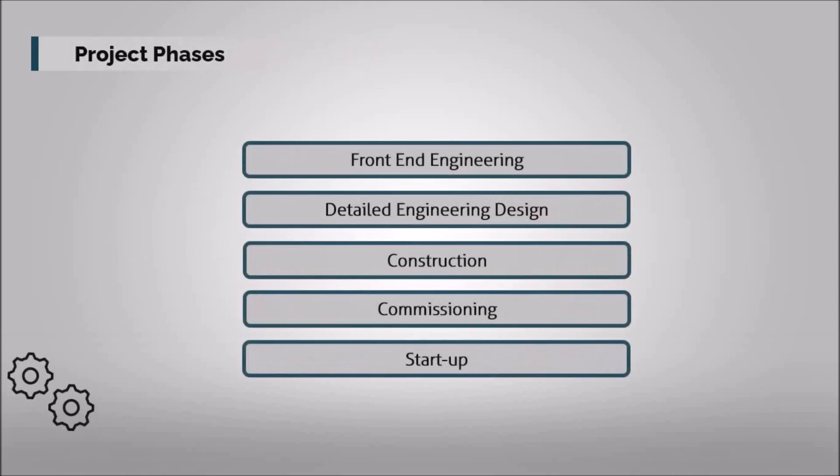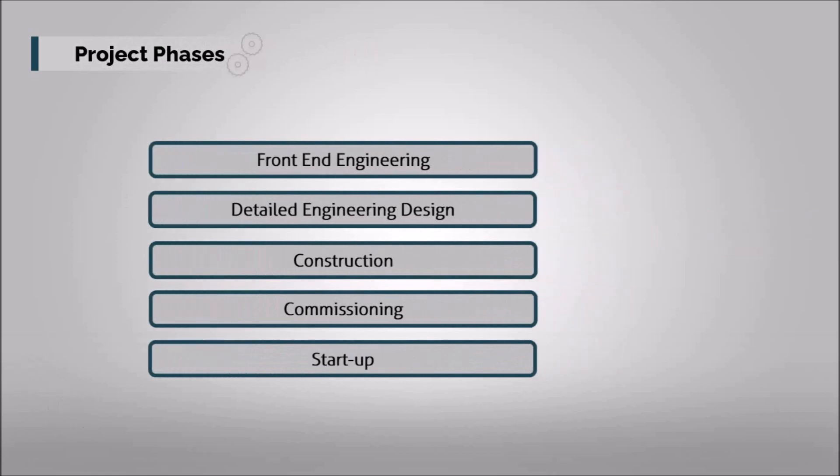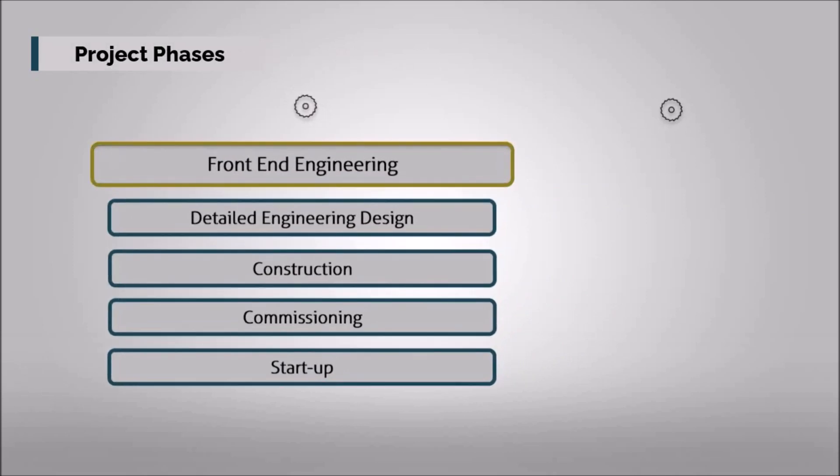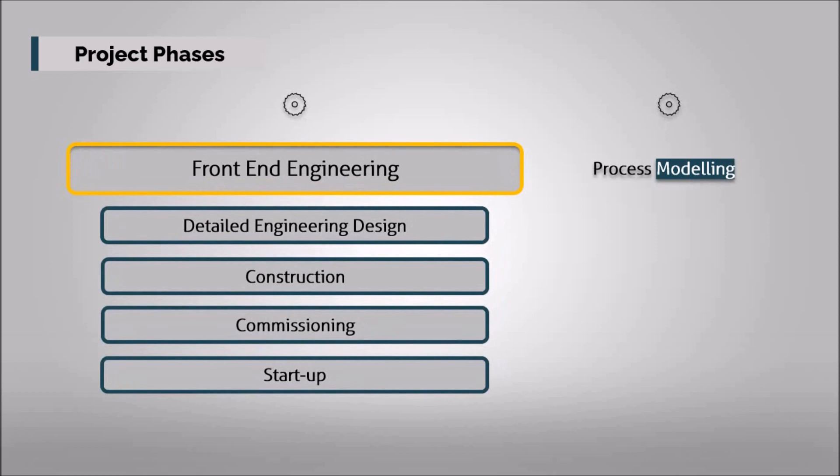The chemical engineering projects are developed by following some phases. It starts with front-end engineering design, which is the stage of development of process modeling drawings, such as block flow and process flow diagrams in simulators and initial estimation of construction cost.